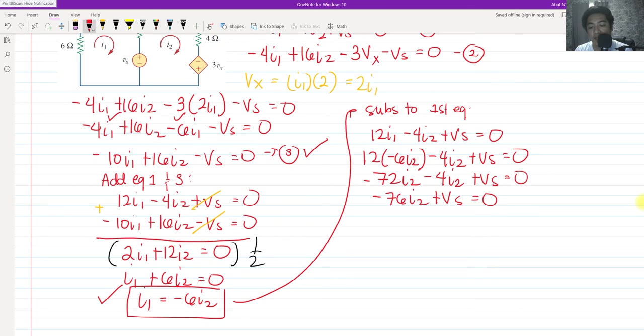If we're going to manipulate this, if we are going to isolate I sub 2, we have negative V sub S all over negative 76. So the negatives will cancel. We have V sub S all over 76.